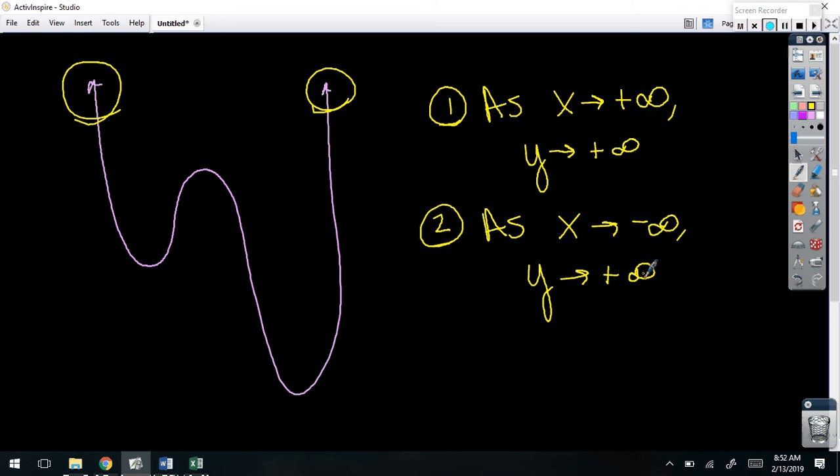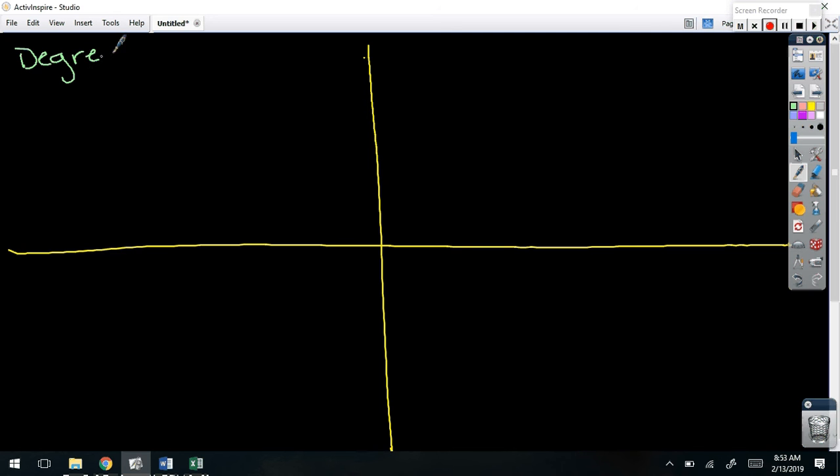The first one is, as x approaches positive infinity, which really just means on the right side of the graph, it's going up. How do I say up? Y approaches positive infinity. And as x approaches negative infinity, which really just means on the left side, it goes up again. So we're going to generalize this based on the equation. Because the neat thing about graphs and end behaviors and polynomials is that there are only four scenarios. Do you see that? On the right side, it could go up or down, and on the left side, it could go up or down. So we're going to make a little chart to help you.